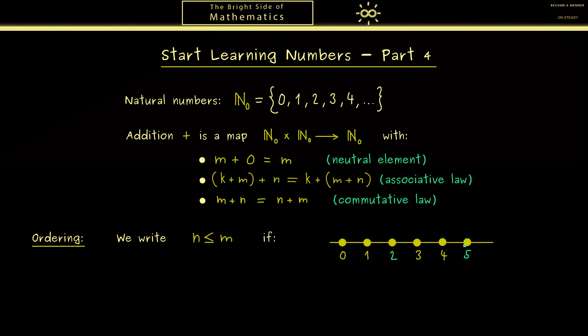So with the visualization in mind, it should be clear how we can define this. For example, why should 5 be greater than 2? Of course, it's simply because we can add something to 2 to reach 5. With the natural numbers, it does not work the other way around. In the formula, this reads as: there exists a k in the natural numbers such that m is equal to n plus k.